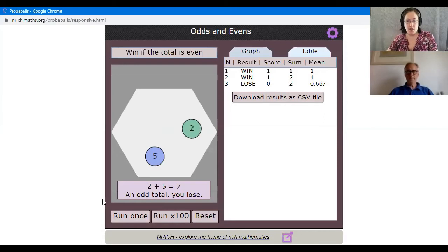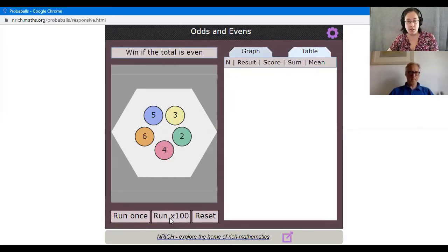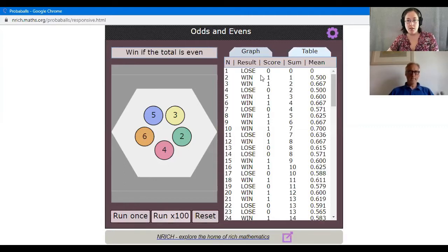I do wonder though whether the game is entirely fair. One way that we might decide if a game is fair is by playing it lots of times to see what happens. Now it would take a long time if I just keep pressing this run once button, so how about we see what would happen if we played the game a hundred times. I'm going to reset this, and when I click the button the computer is going to do this a hundred times and then give us our results in a table.